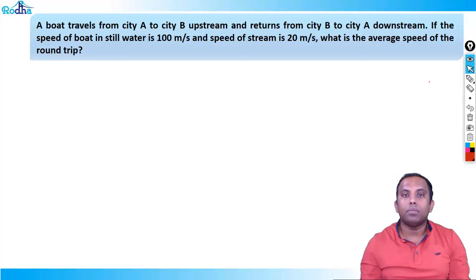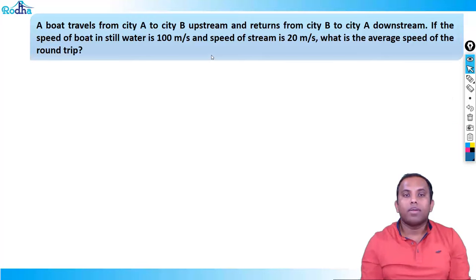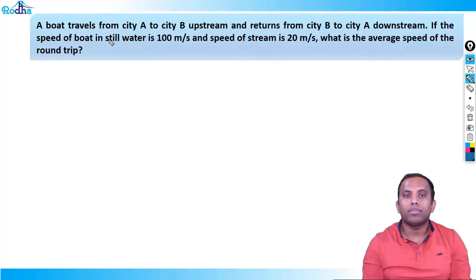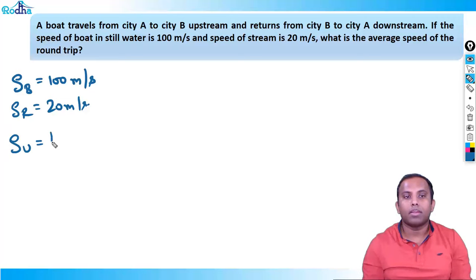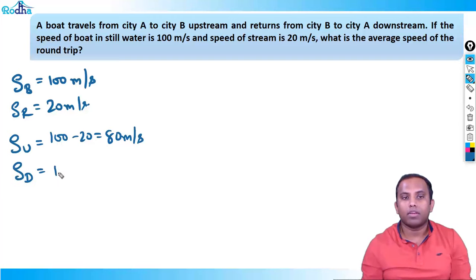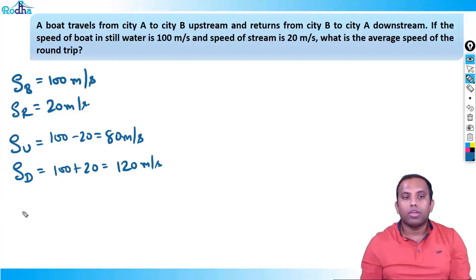A boat travels from city A to city B upstream and returns from city B to city A downstream. If the speed of the boat in still water is 100 m per second and the speed of the stream is 20 m per second, what is the average speed of the round trip? Quite easy. So SB is given as 100 m/s and SR is given as 20 m/s. Upstream speed SB − SR = 100 − 20 = 80 m/s. Downstream speed SB + SR = 100 + 20 = 120 m/s.